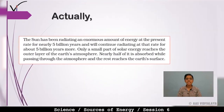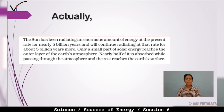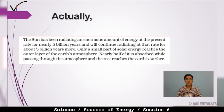The Sun has been radiating an enormous amount of energy at its present rate for nearly 5 billion years and will continue radiating at that rate for about 5 billion years more. Only a small part of solar energy reaches the outer layer of Earth's atmosphere. Nearly half of it is absorbed while passing through the atmosphere, and the rest reaches the Earth's surface.